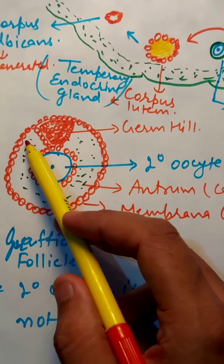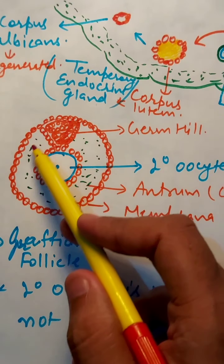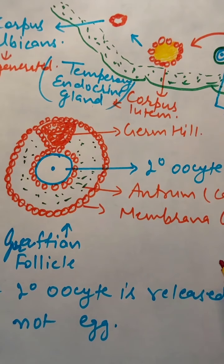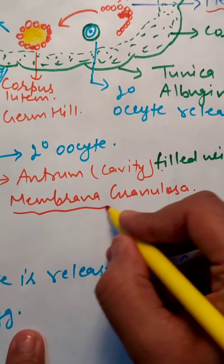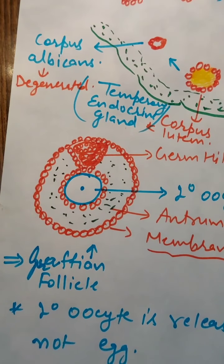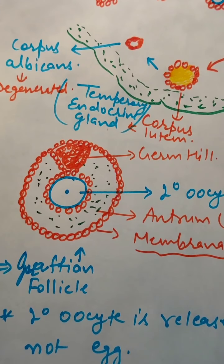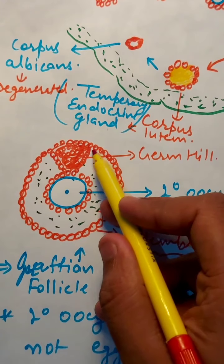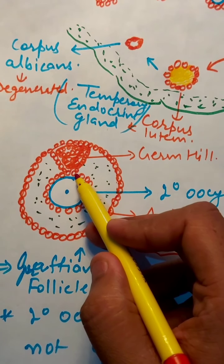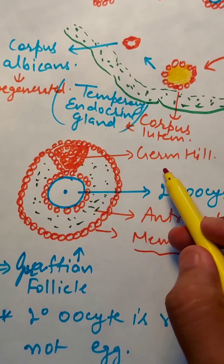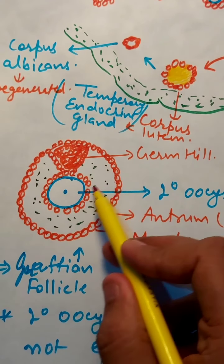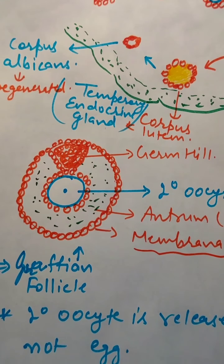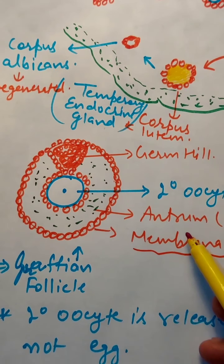The outermost layer of the Graafian follicle is known as membrana granulosa. This membrane is attached to the internal membrane, and this portion is known as cumulus (germ hill). There is a space between these two membranes — a cavity-like structure filled with liquid, known as the antrum.